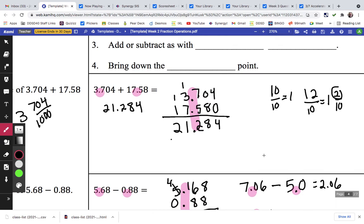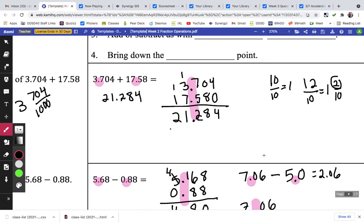So, in case you missed class and you're watching this, when we add or subtract decimals, we line up the decimal points. If we have 3 and 704 thousandths plus 17 and 58 hundredths, notice where I've highlighted the decimal points, and we line those up.